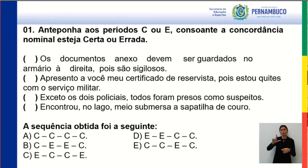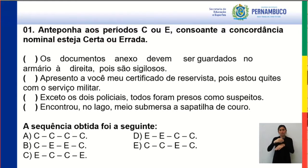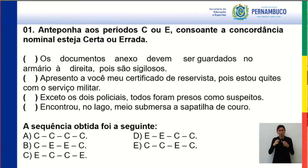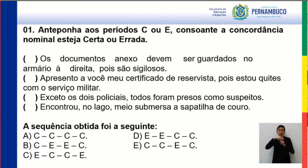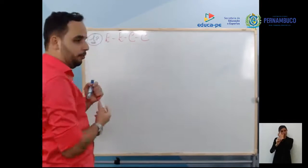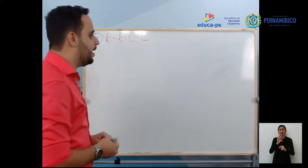Encontrou no lago, meio submersa, a sapatilha de couro. Ela não tá toda pra fora do lago nem toda pra dentro — ela tá um pouco submersa. Não poderia ser 'meia submersa' porque ali é invariável. Então está certo: 'encontrou no lago, meio submersa, a sapatilha de couro.' A resposta é a letra D.